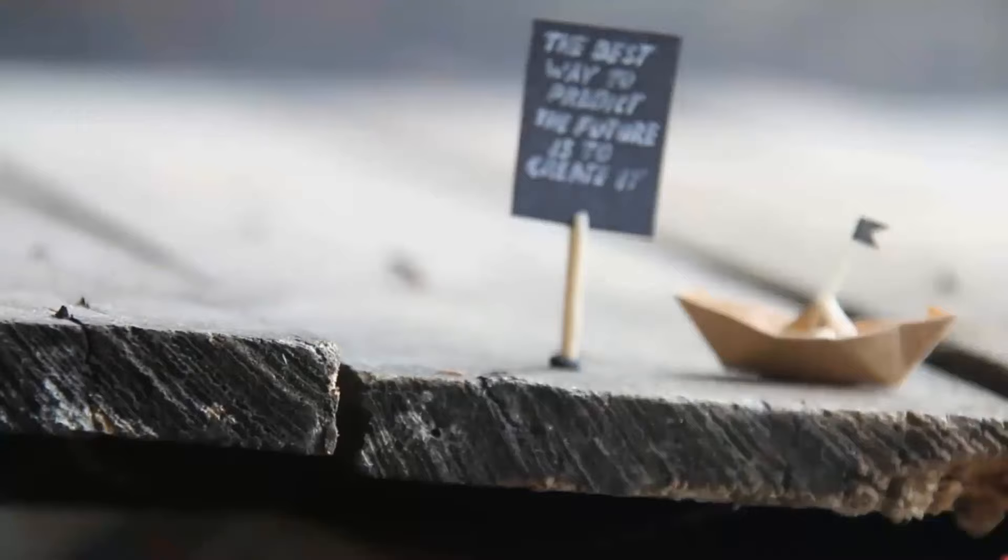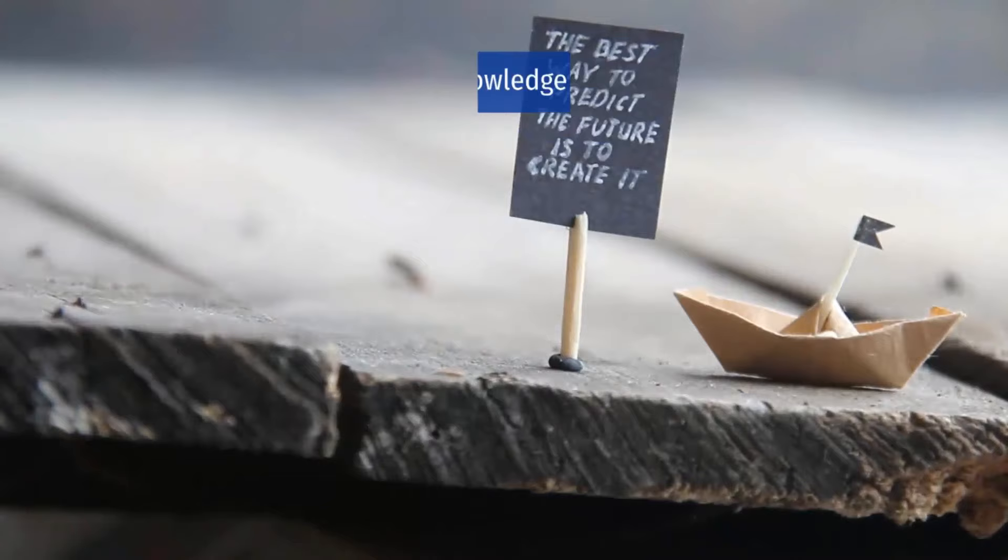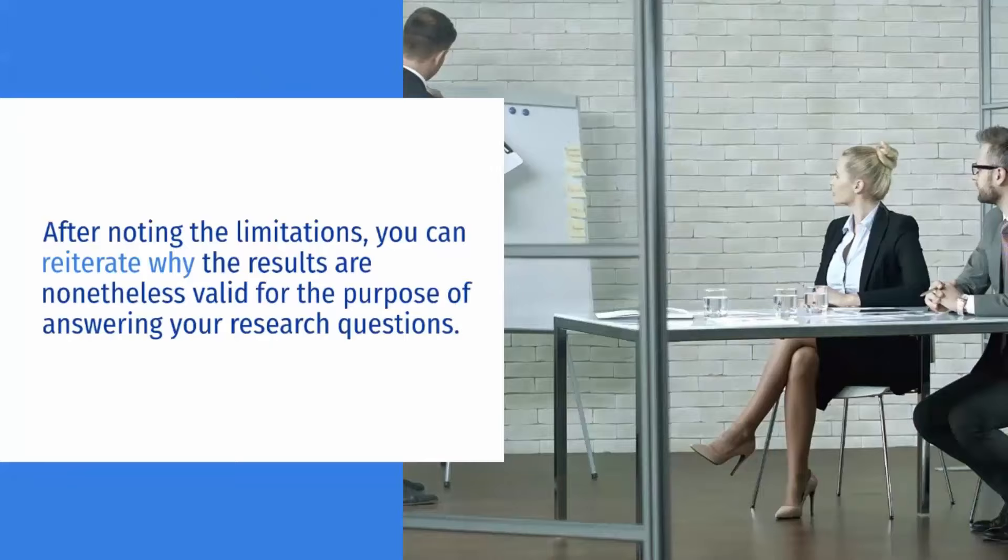If there are potential confounding variables that you were unable to control, acknowledge the effect these may have had. After noting the limitations, you can reiterate why the results are nonetheless valid for the purpose of answering your research questions.